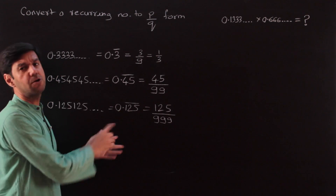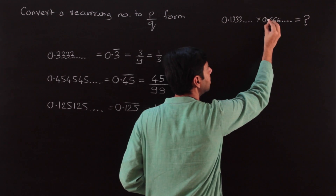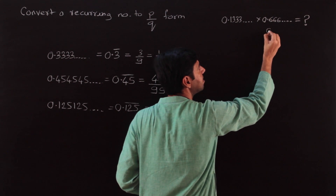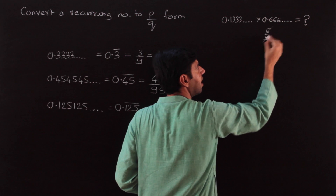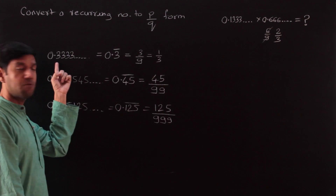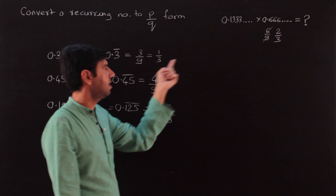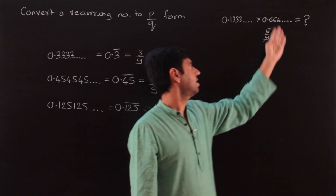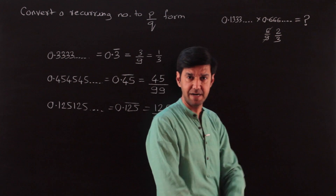For 0.666666..., it's simply 6/9, and 6/9 is nothing but 2/3. If you think about it: one third was 0.3333..., so two thirds is 0.6666... — this is a number encountered very often. That is how you handle the recurring part.